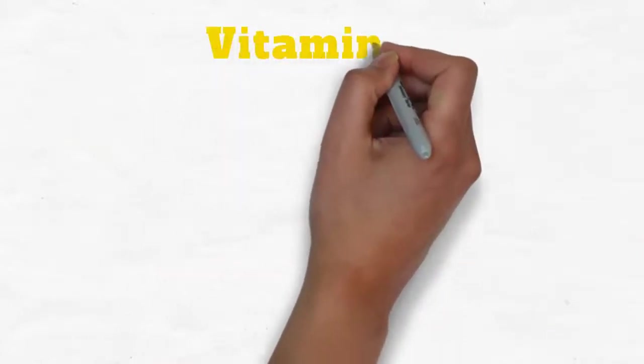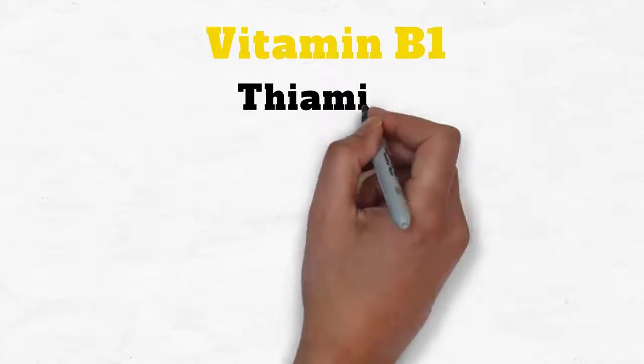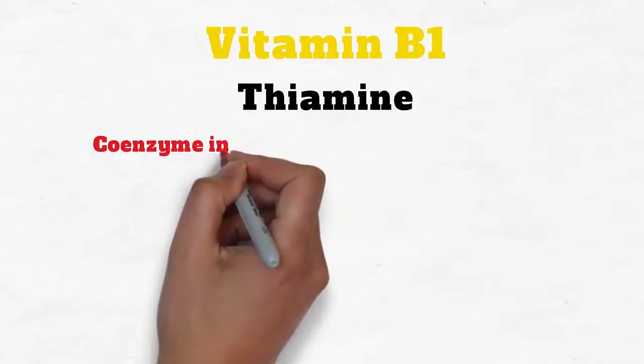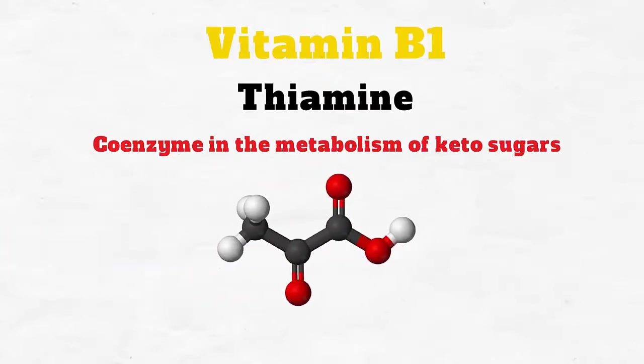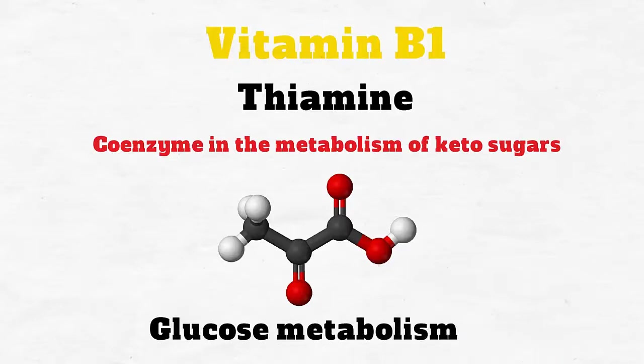Vitamin B1, or thiamine, is a coenzyme in the metabolism of keto sugars. It is also important for the breakdown of pyruvic acid, a product released during glucose metabolism. Therefore, vitamin B1 can improve how cells utilize glucose.